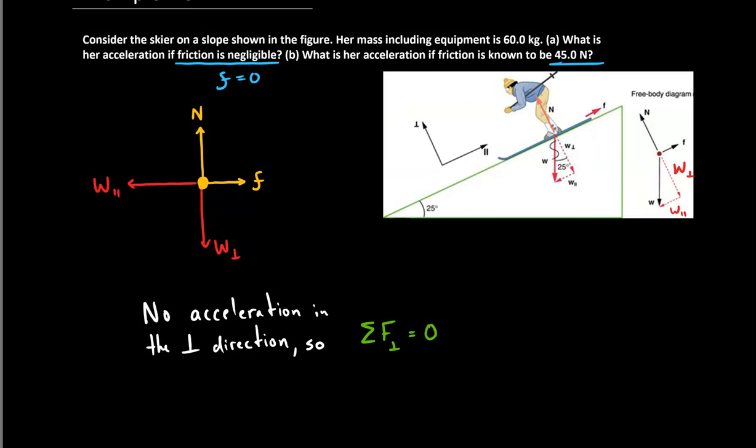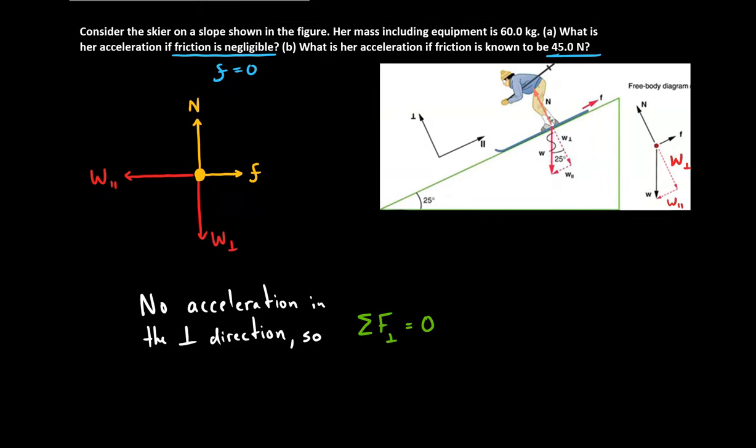However, in the parallel direction to the hill, let's see where to put that. There we go. We know the skier is accelerating. And so we can set up our force equation here. The sum of the forces in the parallel direction is equal to mass times acceleration in the parallel direction. That would be an expression of Newton's second law.